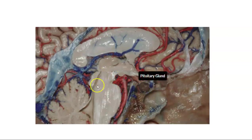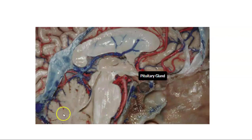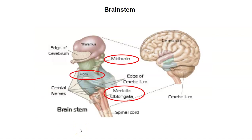Next, we'll look at the brainstem, and then the cerebellum. The brainstem is made up of three parts: the midbrain is the part in green, the pons is the part in blue, and the medulla oblongata is the part in light red.